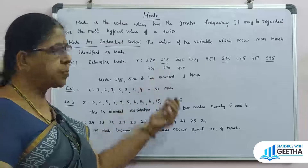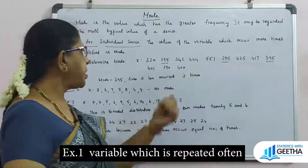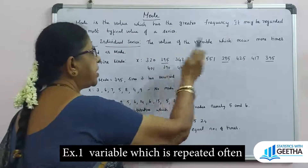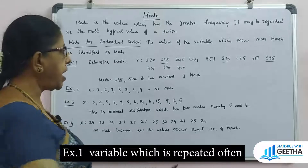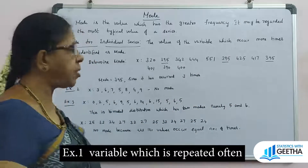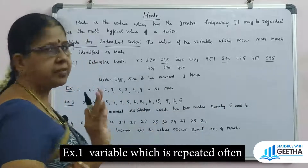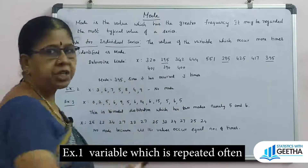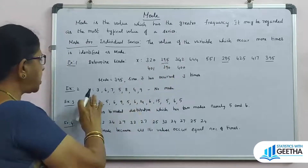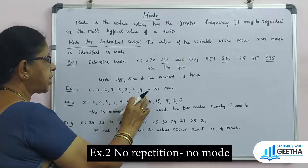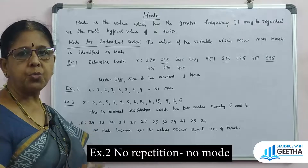Now let's look at examples. To determine the mode, we check which value of the variable is repeated the highest number of times. Looking at this problem — the value 395 appears most often, so mode equals 395 for this individual series. In another problem, if no value repeats, there is no mode at all.